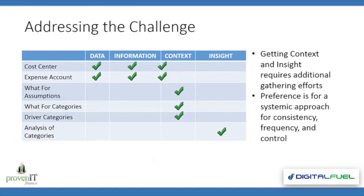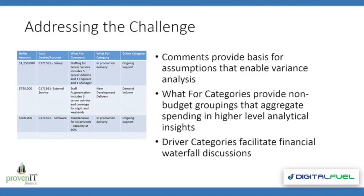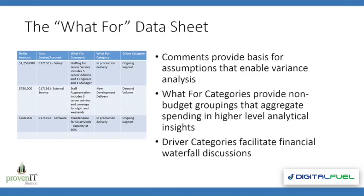In order to address this challenge, we have to think through systemically how we can close the gap and gather that additional insight and context needed for a better understanding of the variance between forecast, planning, and actuals. Cost centers and expense accounts give you data, information, and a little bit of context — but it's 'what for' assumptions, categories for 'what for,' and driver categories that provide additional context. Ultimately, we have to do analysis in order to really get after insight. To do this effectively, particularly in a large organization, requires a preferred method with some systemic approach so we can have consistency, drive this process at some level of frequency — preferably monthly — and have some level of control.